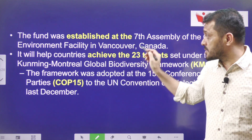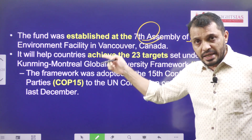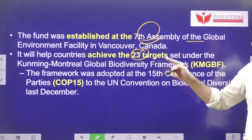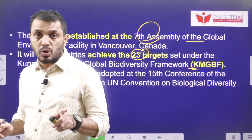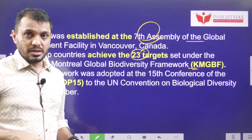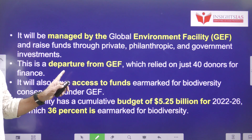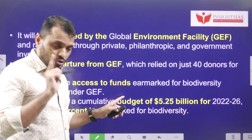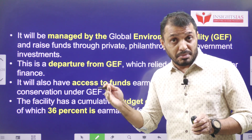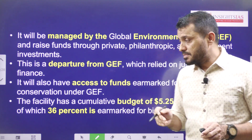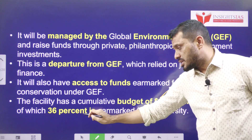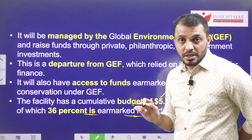This fund was established at the seventh assembly of the Global Environment Facility in Vancouver. It helps countries achieve the 23 targets set in the Kunming-Montreal Global Biodiversity Framework, which is the COP 15 biodiversity framework. This fund differs from the Global Environment Facility because the GEF is dependent only on 40 donating countries, whereas this fund can also accept money from private players. The GEF has a cumulative budget of $525 billion for 2022–2026, with 36% allocated for biodiversity.